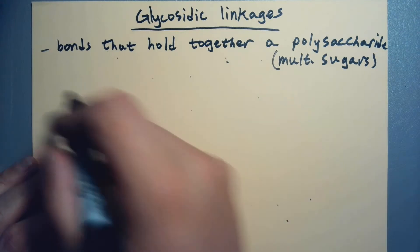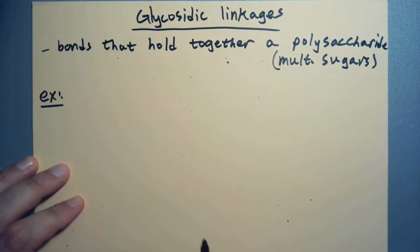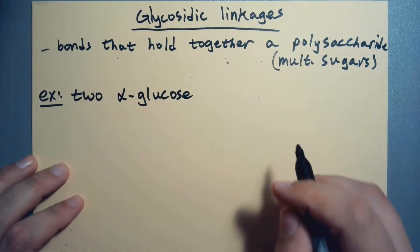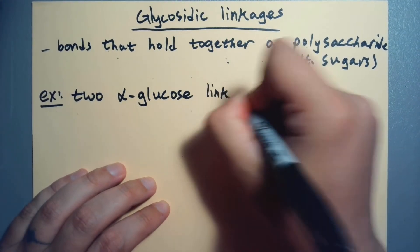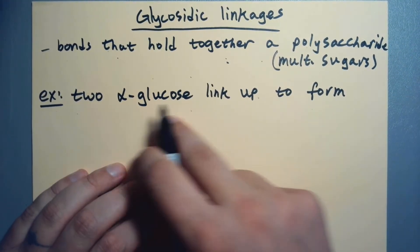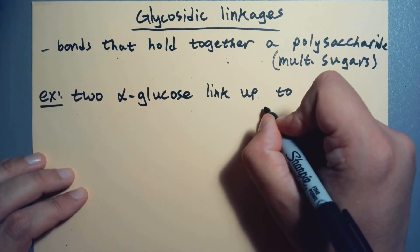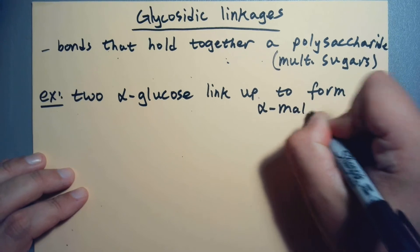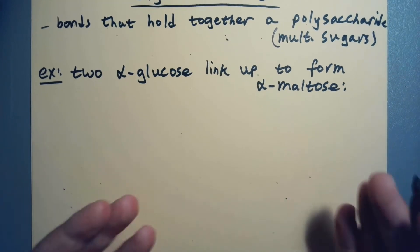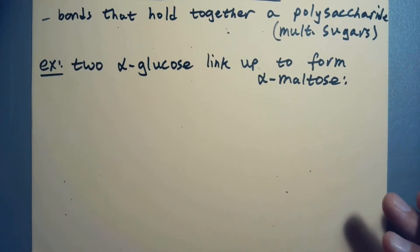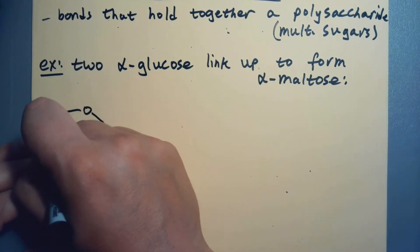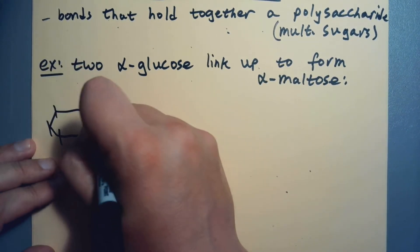Alright, so here's an example. We'll just kick it off. We can have two alpha glucose that will link up to form. So we've got two monosaccharides that are going to link up to form a polysaccharide named alpha maltose. And so we're going to draw a condensation reaction, but now we're going to do it with sugars. And so they're going to be in their ring structures. All of these linkages will involve sugars in their ring structures.